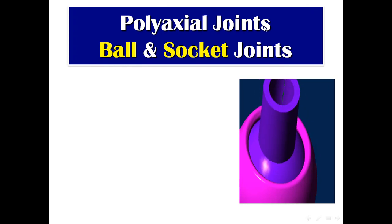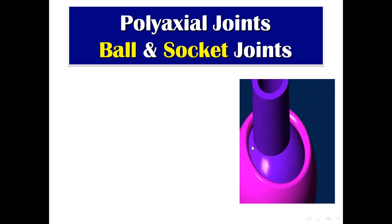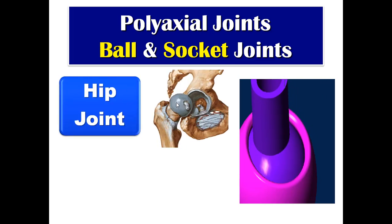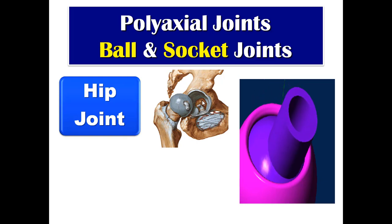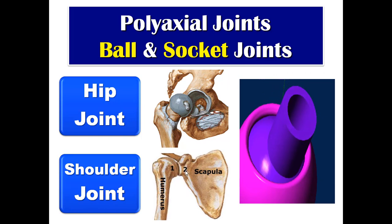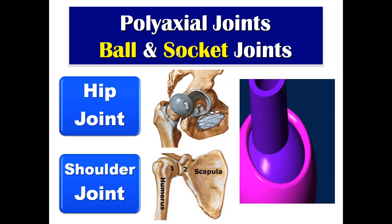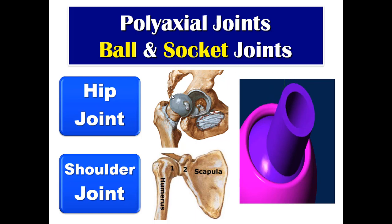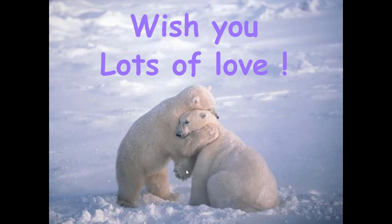Polyaxial joints have a ball and a socket, so they are called ball-and-socket joints. The two famous examples are the hip joint — between the femur and the acetabulum of the hip bone — and the shoulder joint — between the head of the humerus and the scapula.